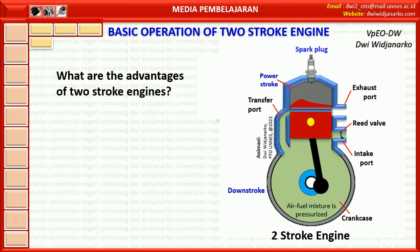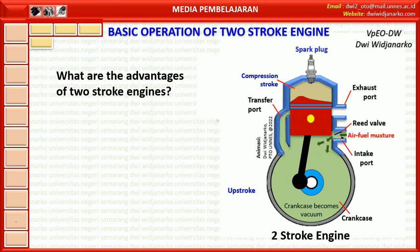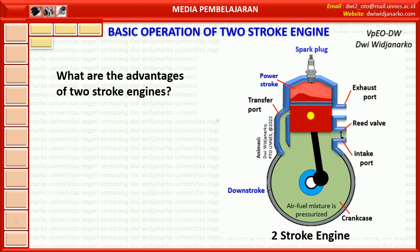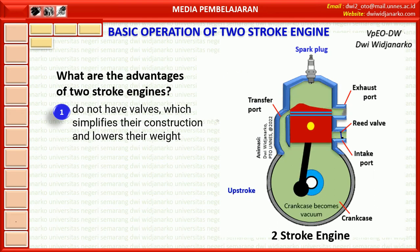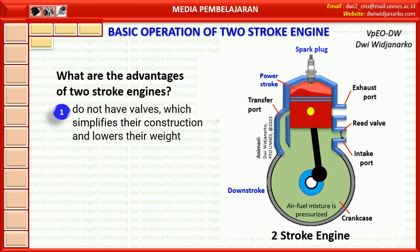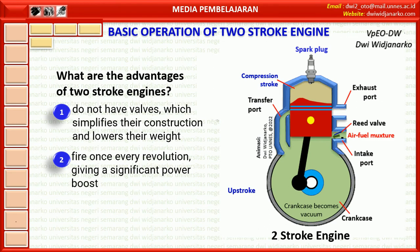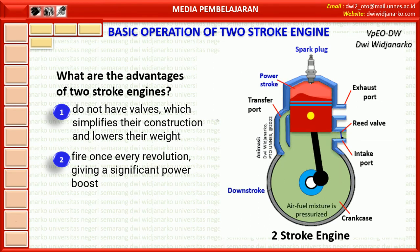You find two-stroke engines in devices such as motorcycles, chainsaws, and jet skis, because two-stroke engines have three important advantages over four-stroke engines. First, two-stroke engines do not have valves, which simplifies their construction and lowers their weight. Second, two-stroke engines fire once every revolution, while four-stroke engines fire once every other revolution. This gives two-stroke engines a significant power boost.